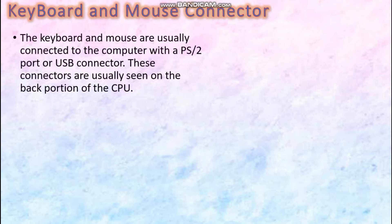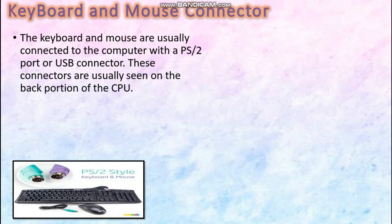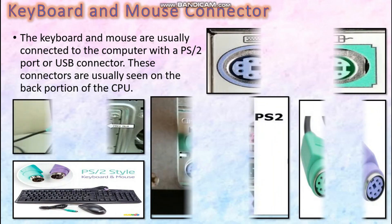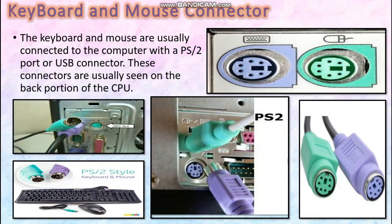Let us learn about the keyboard and mouse connector. The keyboard and mouse connector are usually connected to the computer with a PS2 port. PS stands for Personal System. These connectors are usually seen at the back portion of the CPU. This port is used to connect a single device — the keyboard port is in purple color and the mouse port is in green color.